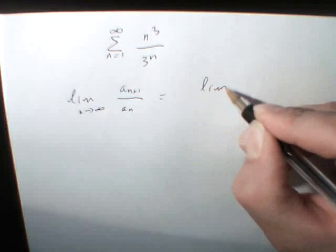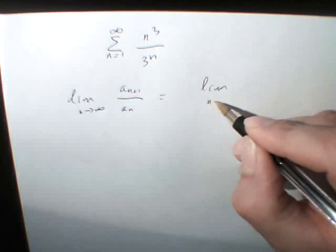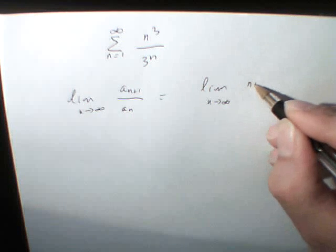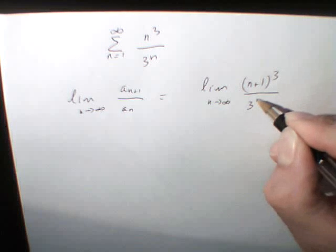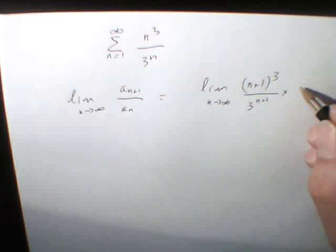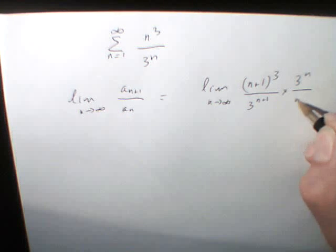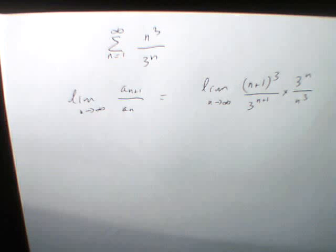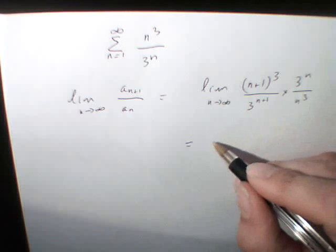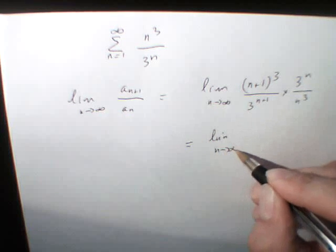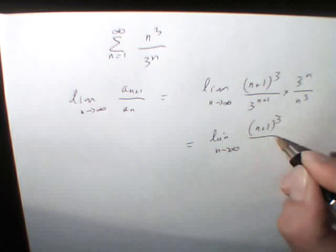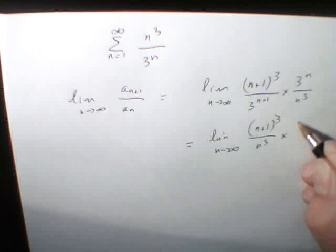In this case, it's going to be the limit of (n+1)³ divided by 3 to the power of n+1, multiplied by the inverse of aₙ, which is going to be 3ⁿ divided by n³, for n tending towards infinity. So let's develop this. It's going to be the limit for n tending towards infinity of (n+1)³ divided by n³, multiplied by 1/3.